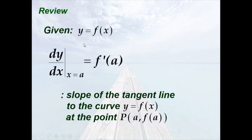First, let us recall that for a function in one variable, say y equals f of x, the derivative of the function f evaluated at x equals a is interpreted as the slope of the tangent line to the curve y equals f of x at the point p, which is (a, f(a)).